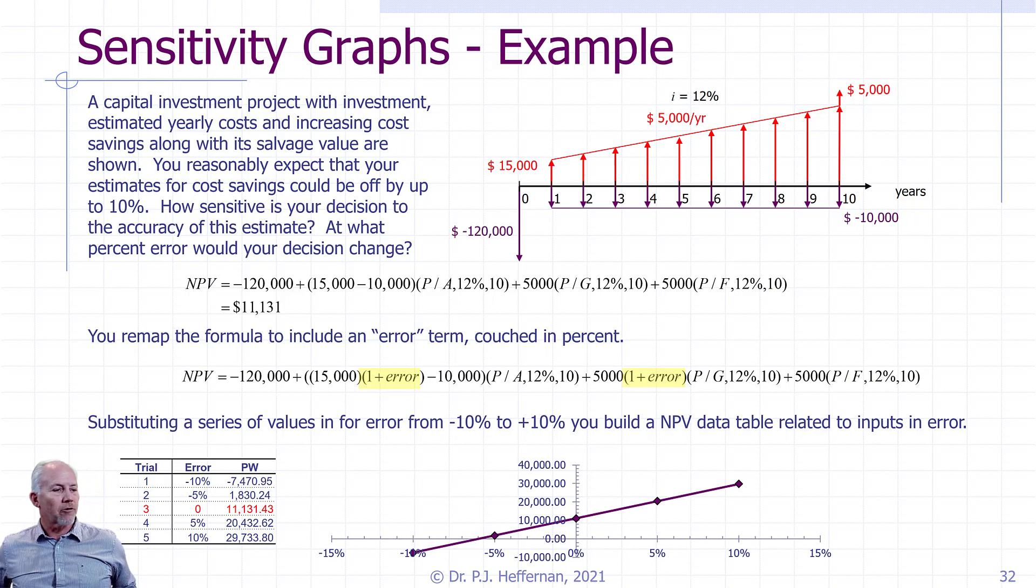We're able to graph it out and see that indeed our project valuation and viability is very sensitive to any errors that we may have made in our cost savings estimates. We can see that if we are off by 6%, if we have an error of minus 6% on our cost savings, we actually change the viability of our project from being viable to not being viable.